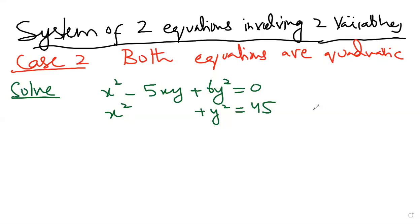The topic is quadratic equations and the subtopic is a system of two equations involving two variables. This is Case 2, where both equations are quadratic — but it's different from the Case 2 we solved just before. The only difference is that in the previous case, only x-squared and y-squared terms appeared in both equations, whereas here there is also an xy term present.